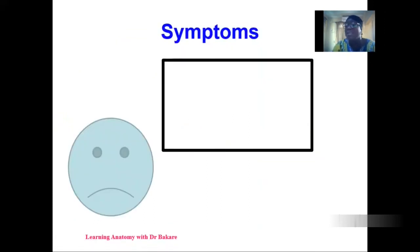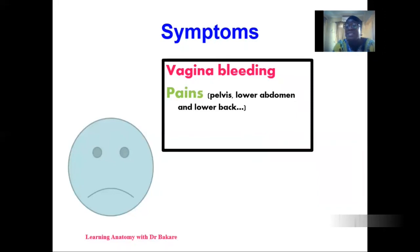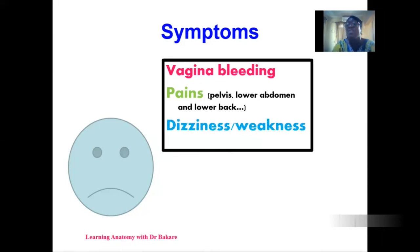In ectopic pregnancy, the patient will also present a positive pregnancy test. However, there are symptoms that can indicate the possibility of ectopic pregnancy, including vaginal bleeding, pain around the pelvic region, the lower abdominal region, and the lower back region, as well as dizziness and weakness. Ectopic pregnancy can be confirmed with ultrasound.